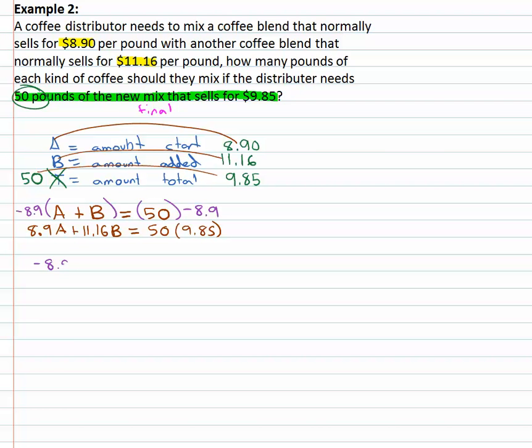So we end up with negative eight point nine A minus eight point nine B equals fifty times eight point nine is going to give us four forty five. Negative, because that was a negative, right?